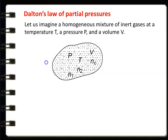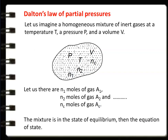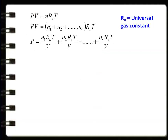Dalton's law of partial pressure: consider a container with a homogeneous mixture of inert gases at temperature T, pressure P, and volume V. The gas constituents are not chemically reacting between them. The total pressure is P, total volume is V, and total temperature is T. We have N1 moles of gas A1, N2 moles of gas A2, up to Nc moles of gas Ac. The mixture is in chemical equilibrium. The equation of state is PV = N·Ru·T, where Ru is the universal gas constant and N = N1 + N2 + N3 + ... + Nc.